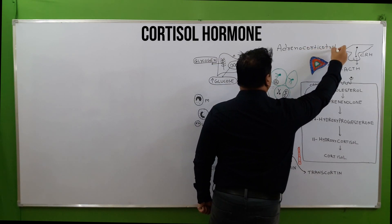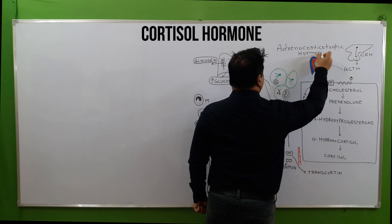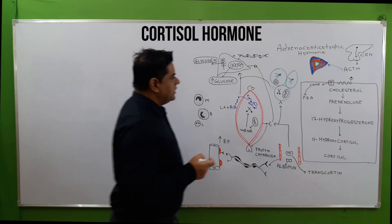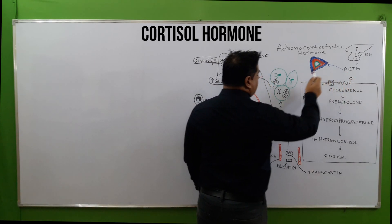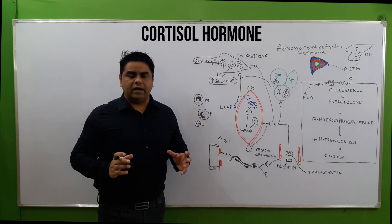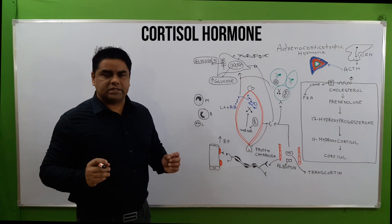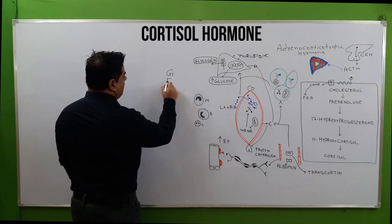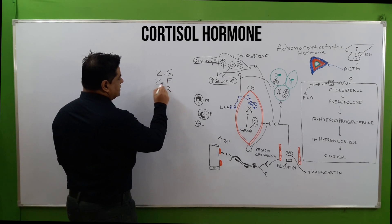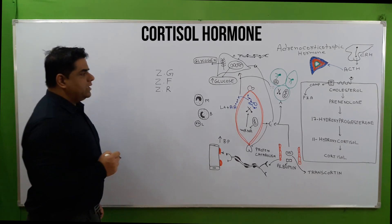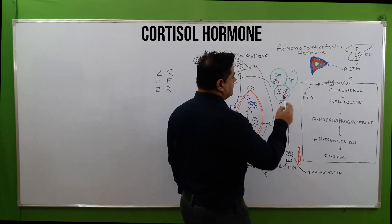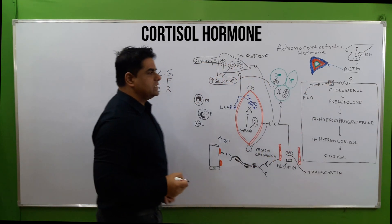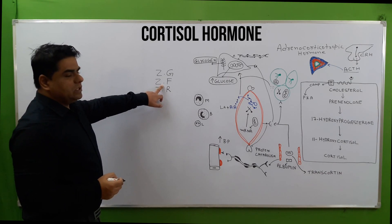Adrenocorticotropic hormone is very important for our survival. ACTH is secreted by the anterior pituitary gland and travels via blood to the adrenal gland. The adrenal gland has three layers known as GFR: zona glomerulosa, zona fasciculata, and zona reticularis. ACTH acts on the second zone, zona fasciculata, to release the hormone cortisol.